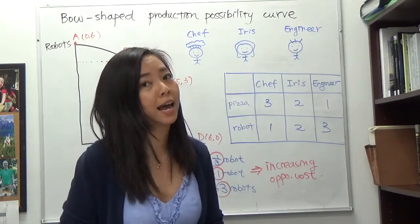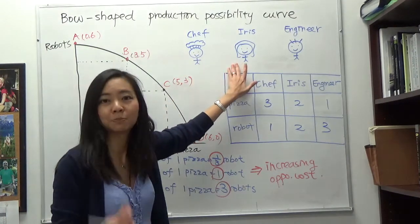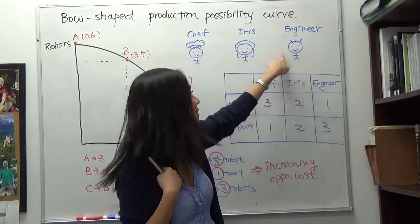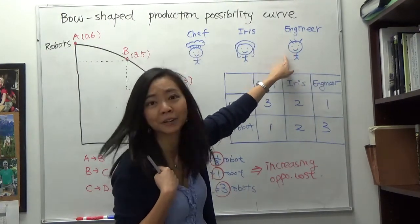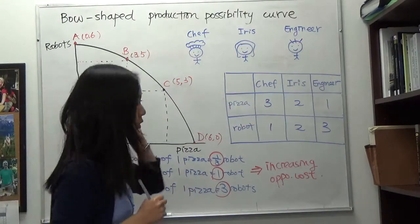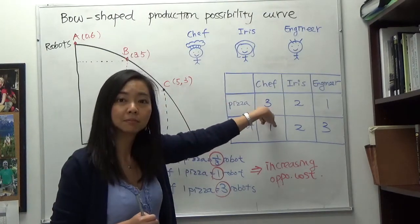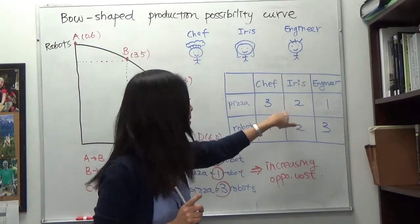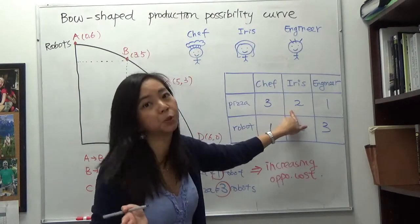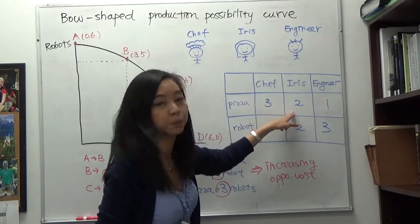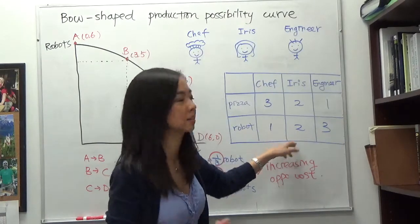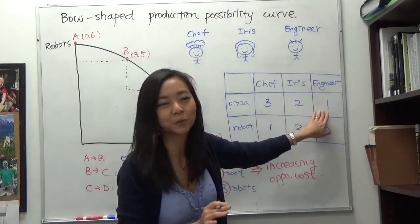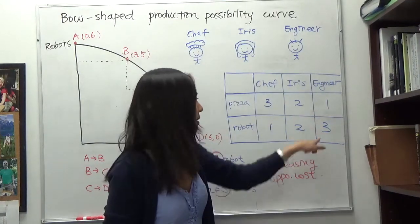Suppose we have a mini economy with only three workers: the chef, Iris (that's me — an economist and also a mom who knows how to cook), and an engineer. In each labor hour, the chef can produce three pizzas or one robot. Iris can produce two pizzas or two robots per labor hour. The engineer can produce one pizza or three robots per labor hour — he's a great robot producer but not a great cook.